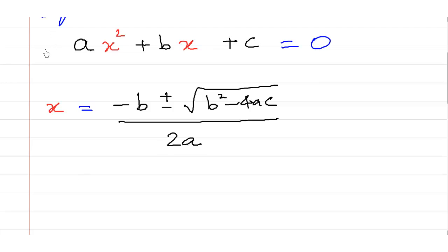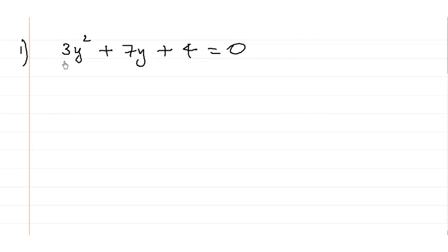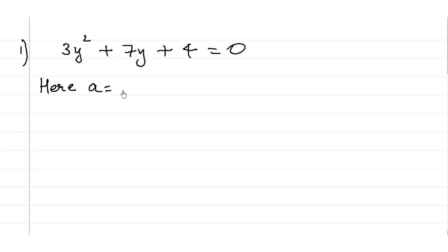Either you learn this formula or you just practice a few sums and you can already learn the formula. Now let's take an example: 3y² + 7y + 4 = 0. Here, first of all we need to write this in the standard form — it's already in the standard form. Since the variable is y, we can state that a has a value of 3, the value of b is positive 7, and the value of c is 4.